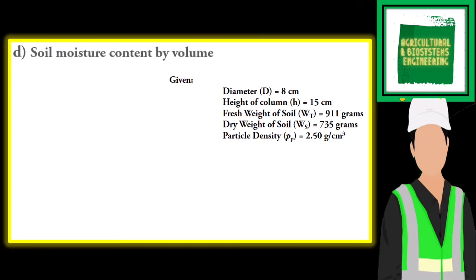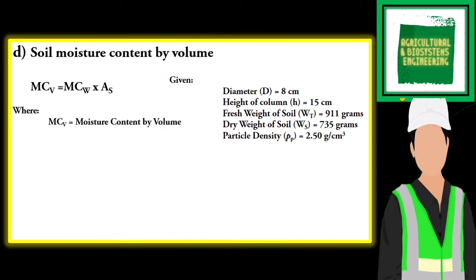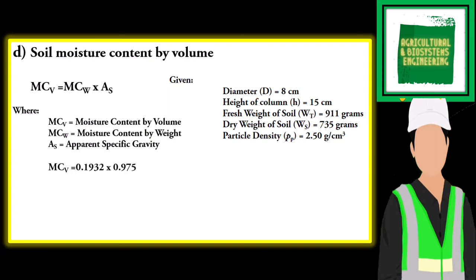Next, we will be solving for the value of the soil moisture content by volume. We will be using this formula, substituting the values we have. The answer is 18.84 percent for our moisture content by volume.